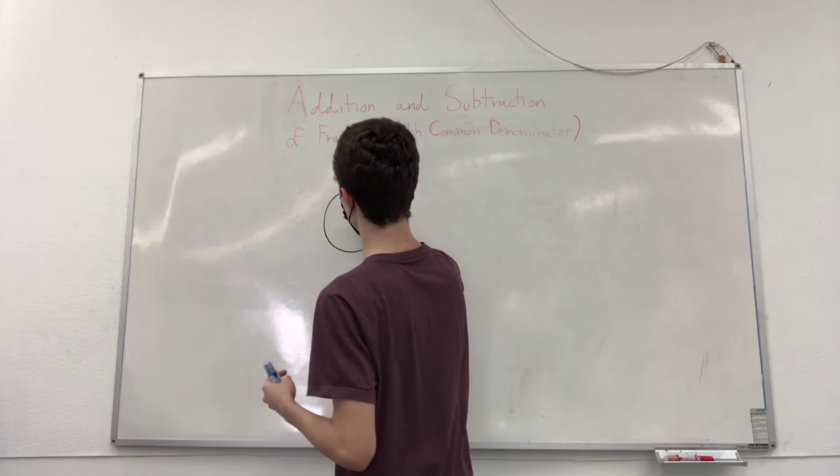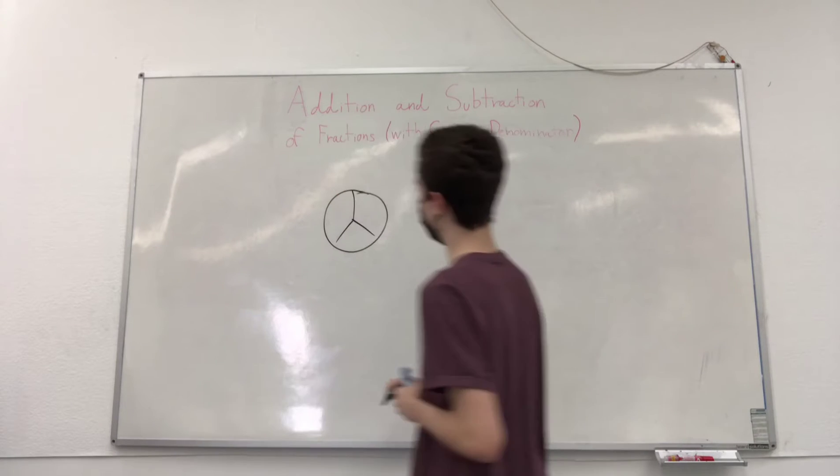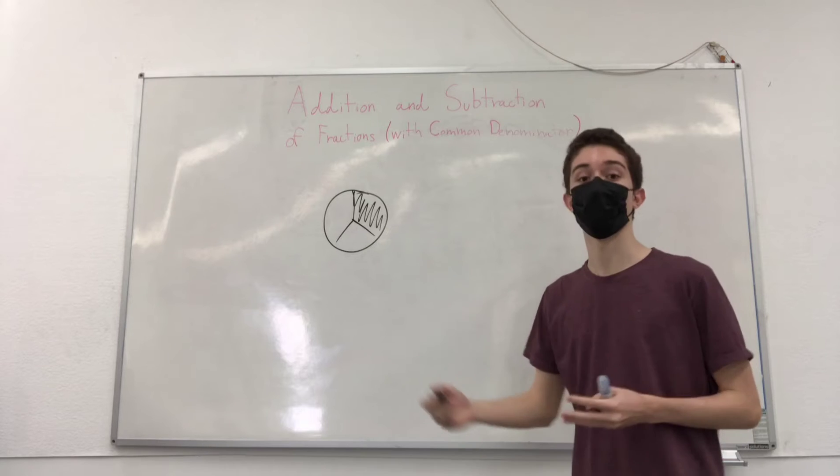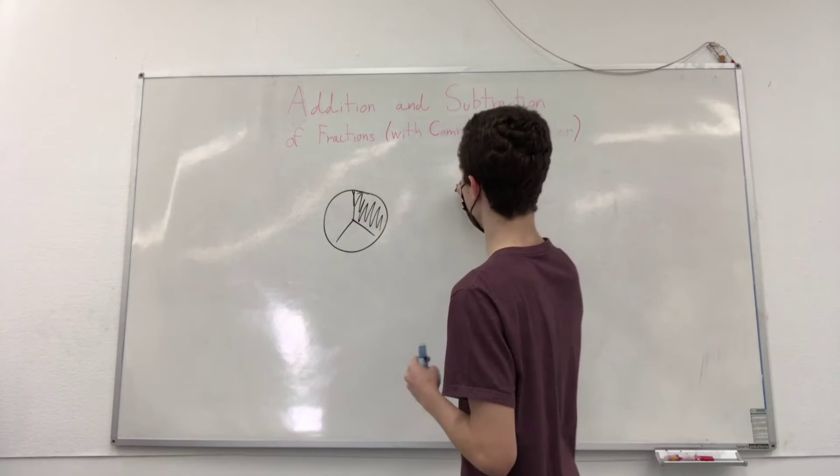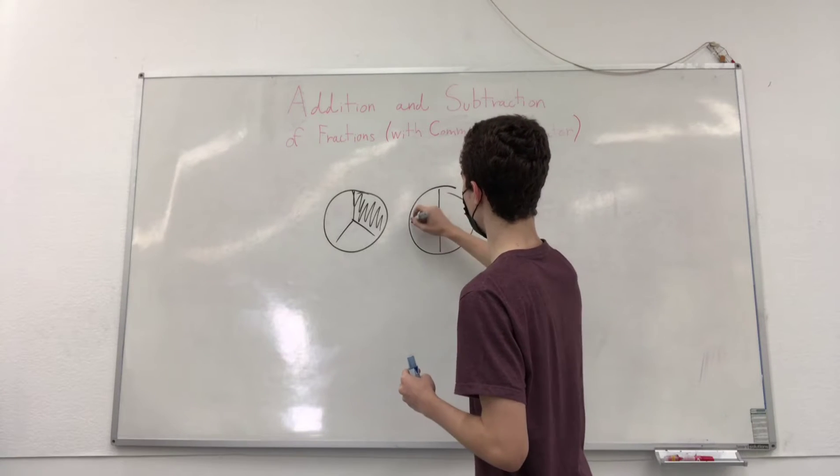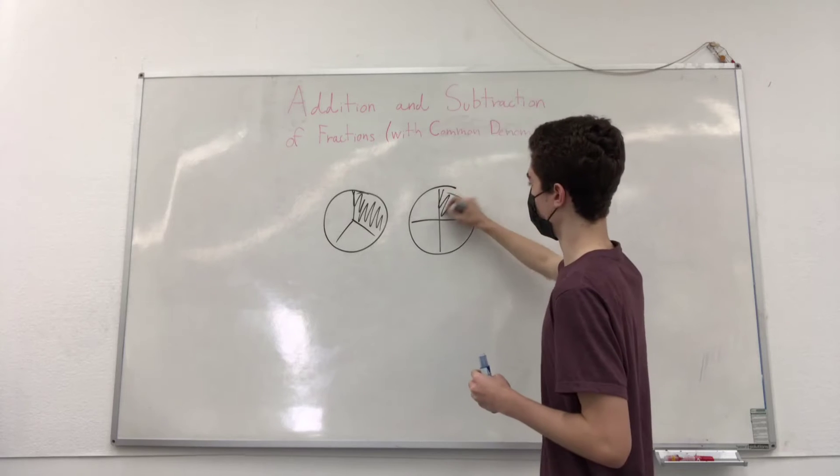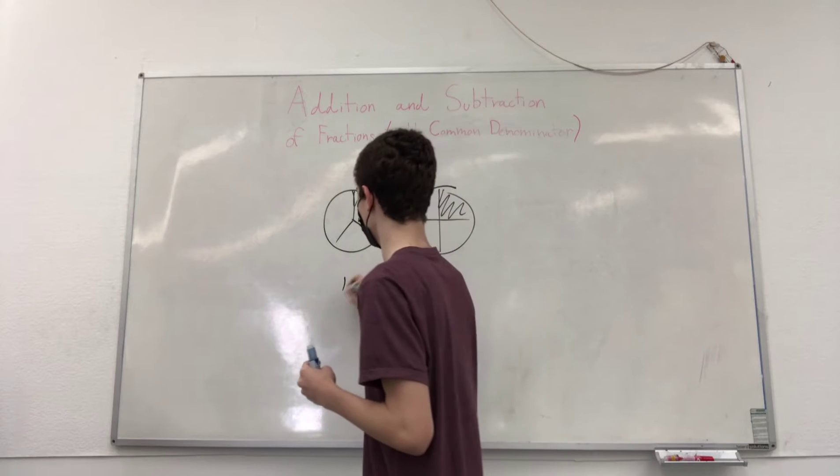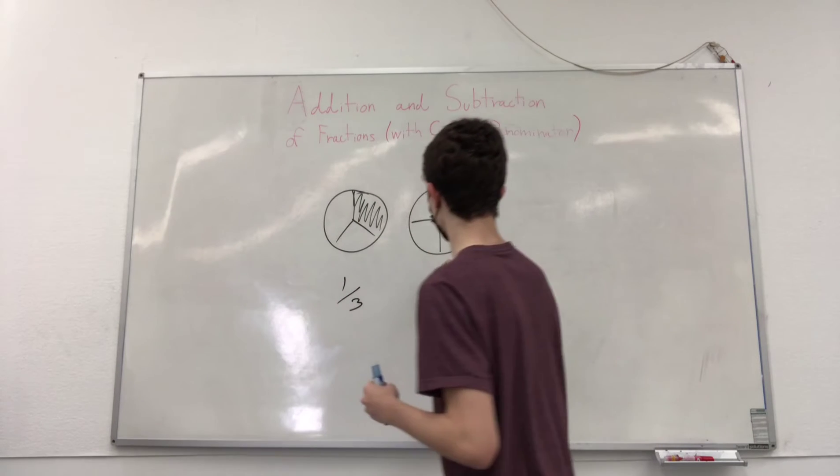A pizza which is split into three parts. If we have one of these three parts, then we have one third of the pizza. If we have a pizza that is split into four parts, then you have one of those parts, we have one fourth of that pizza. And we can write that as one third in this case and one fourth.